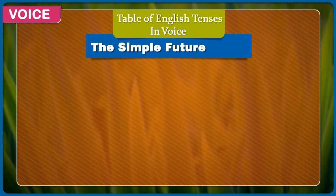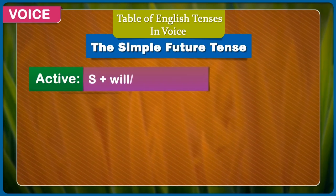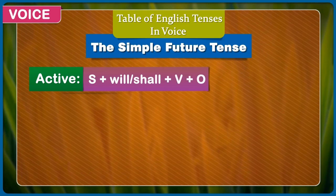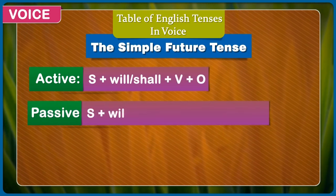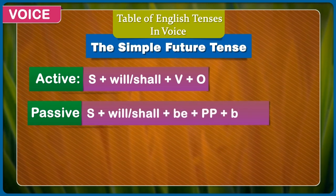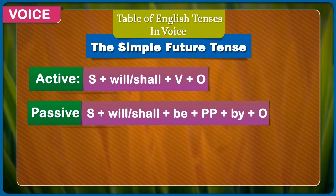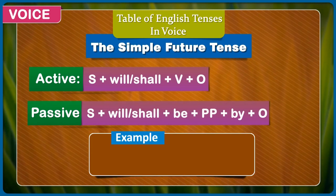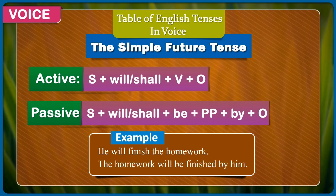Simple future tense. Active: subject + will/shall + verb + object. Passive: subject + will/shall + be + past participle + by + object. Example: He will finish the homework. The homework will be finished by him.